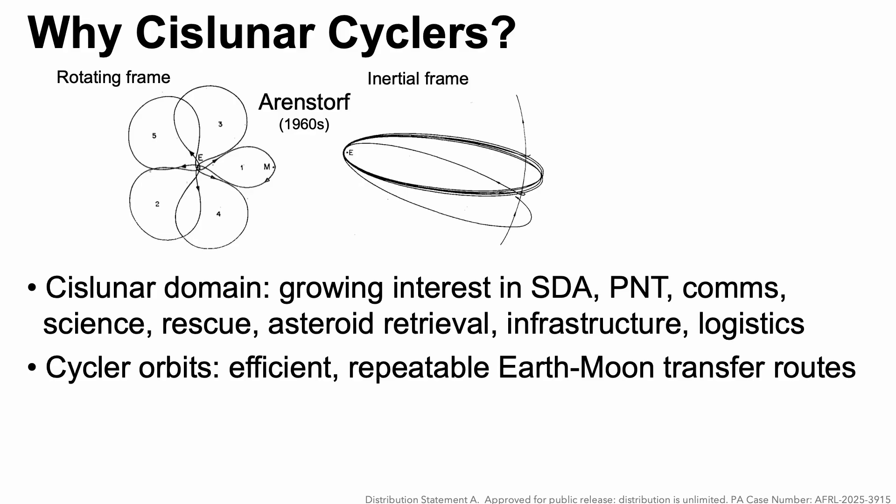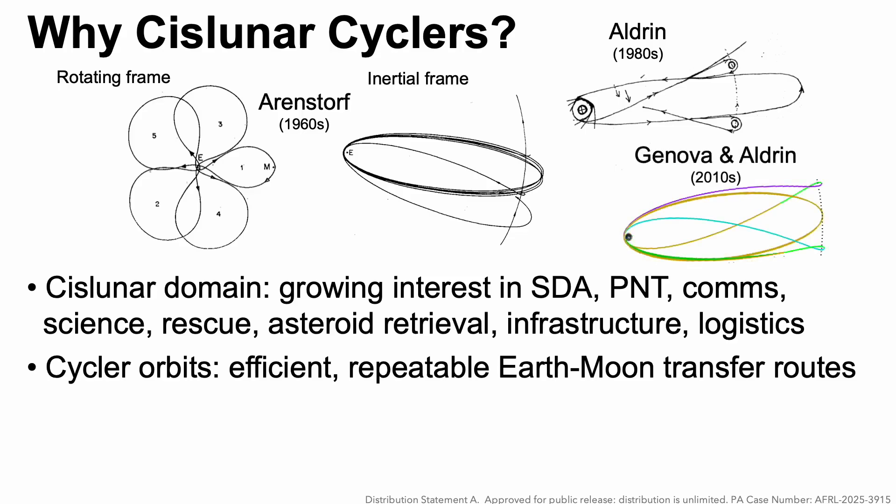Work in this area started in the 1960s with Arnstorff, who found some cycler orbits shown here on the left in the rotating frame and right in the usual inertial frame. This was really championed by Buzz Aldrin in the 1980s, who had a concept for an Earth-Moon cycler that would pass close to the Earth and the Moon, and was continued by Jenova and Aldrin in the 2010s.